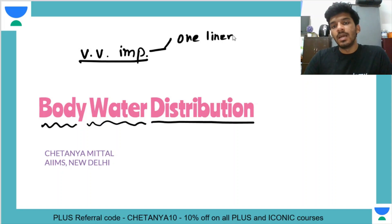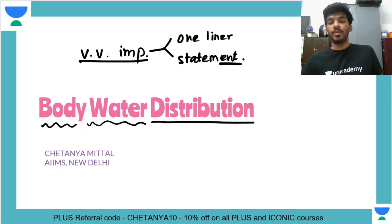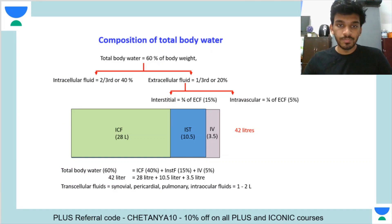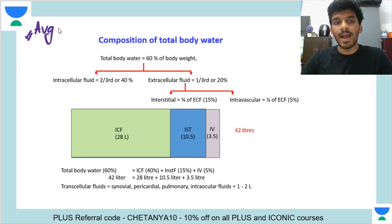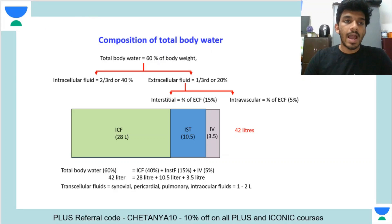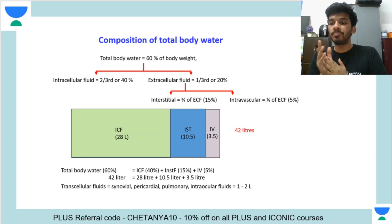You might get statement-based questions from this topic. Sometimes they'll give you a question about how much potassium or sodium is distributed between the ICF and the ECF. So you need to know this distribution data. Whenever you do these calculations, take the average body weight of a man to be around 70 kg. Be careful if a different weight is given in the question, because some parameters can vary. Do not memorize values in kg — remember the percentages and stick to the concept.